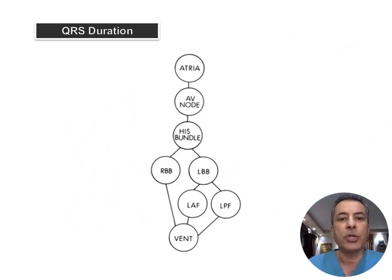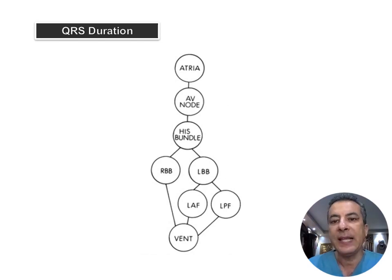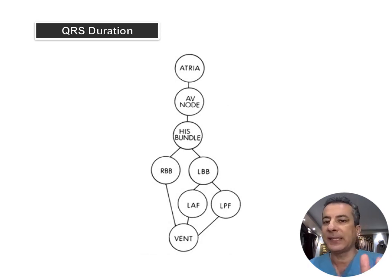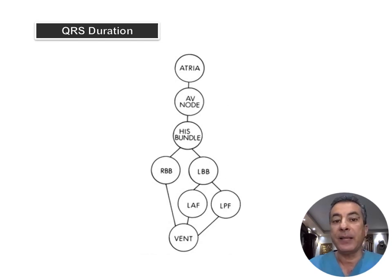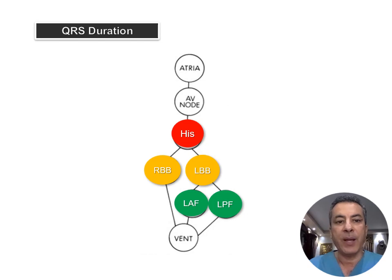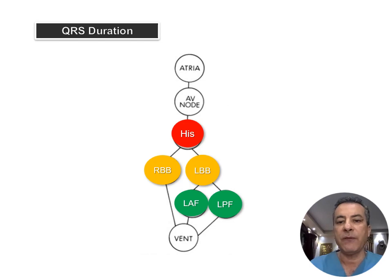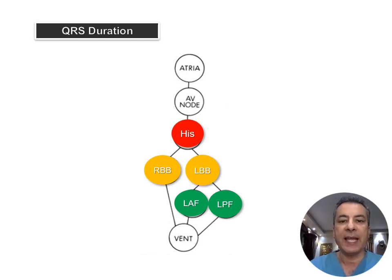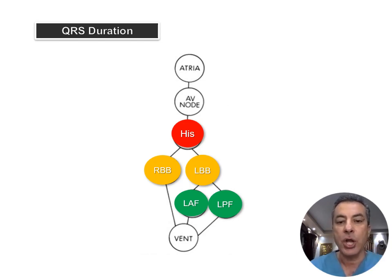One of the crucial factors in maintaining a narrow QRS complex — indicating simultaneous ventricular depolarization — is the specialized conducting system within the ventricle. This system encompasses the bundle of His, the right bundle branch, and the left bundle branch, which is further divided into the left anterior fascicle and the left posterior fascicle. Any pathology affecting any segment of this system can lead to loss of synchronized cardiac depolarization, potentially reducing the mechanical efficacy of the heart.